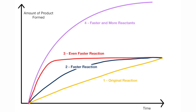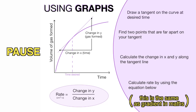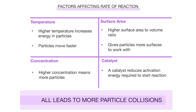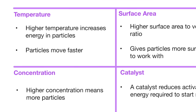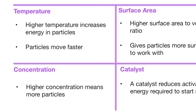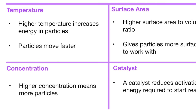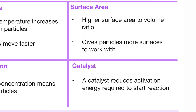You need to understand the graphs for rate of reaction and what they mean. You also need to know how to calculate the rate, the same as how you calculate them in maths. There are many factors that affect the rate of reaction. These include temperature, concentration, surface area, and the presence of a catalyst.